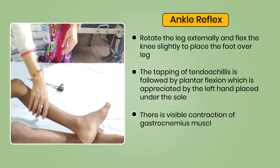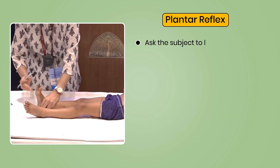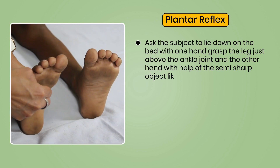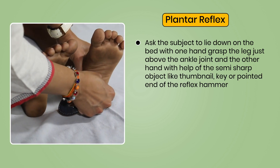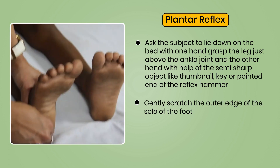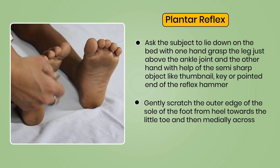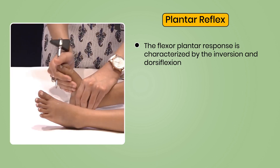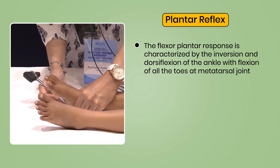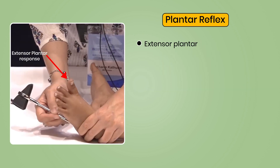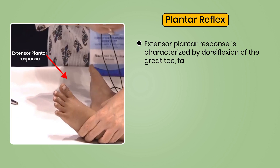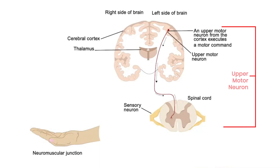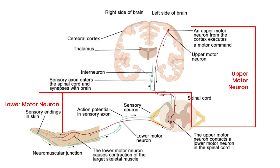There is visible contraction of the gastrocnemius muscle. Plantar reflex: with one hand grasp the leg just above the ankle, and with the other hand use a semi-sharp object like a thumbnail, key, or pointed end of reflex hammer; gently scratch the outer edge of the sole from the heel towards the little toe, then medially across the metatarsals towards the ball of the great toe. The flexor plantar response — inversion and dorsiflexion of ankle with flexion of all toes — is normal. The extensor plantar response — dorsiflexion of the great toe, fanning and extension of other toes — is found in upper motor neuron lesions and normally in children under 2 years or in deep sleep.